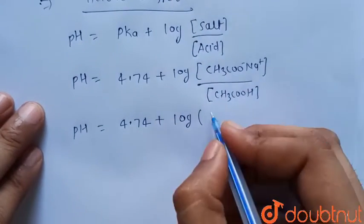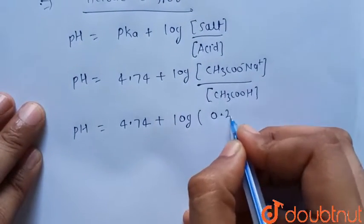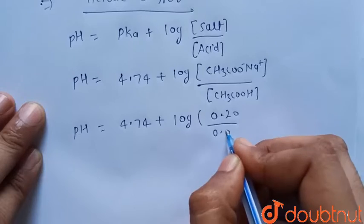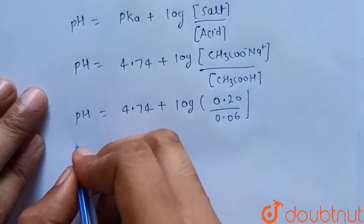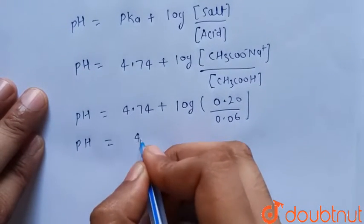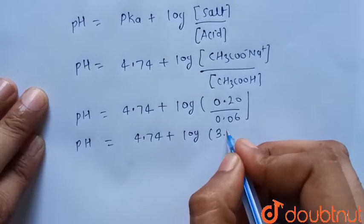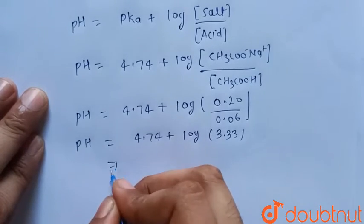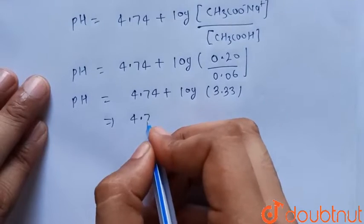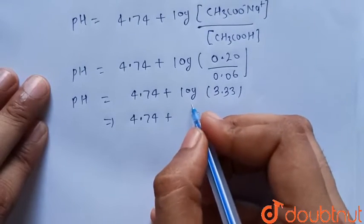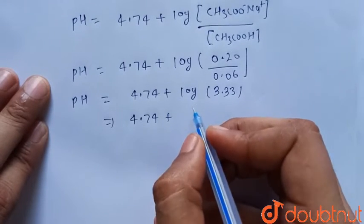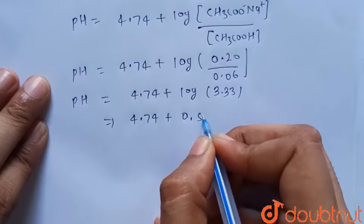Calculating the ratio: 0.20/0.06 = 3.33. So pH = 4.74 + log(3.33) = 4.74 + 0.522.